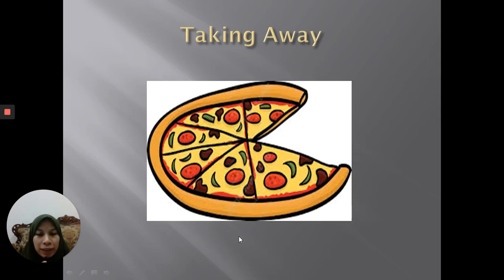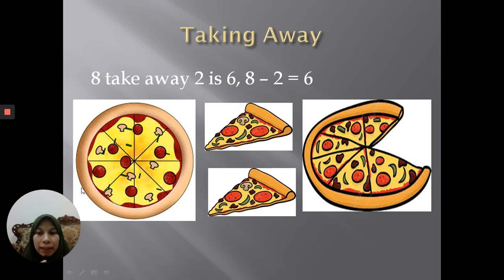Of course, the pizza will be decreased by 2, right? So it will become 1, 2, 3, 4, 5, 6 — it will become 6. So 8 slices of pizza take away 2 is 6. So 8 minus 2 is actually 6. This happens every day without us realising it, right?